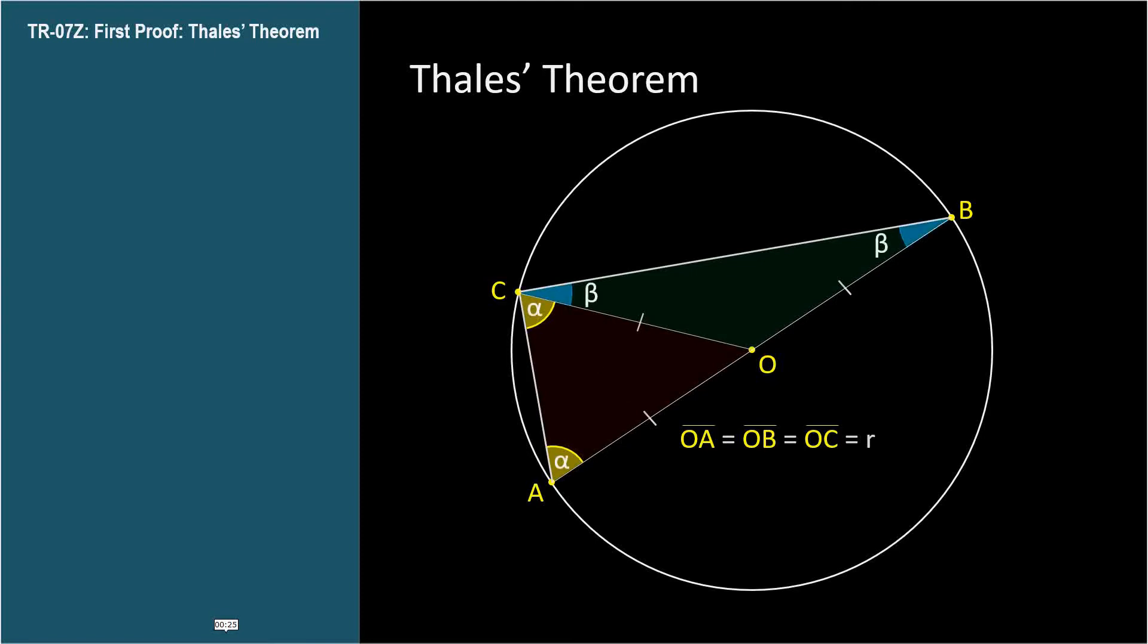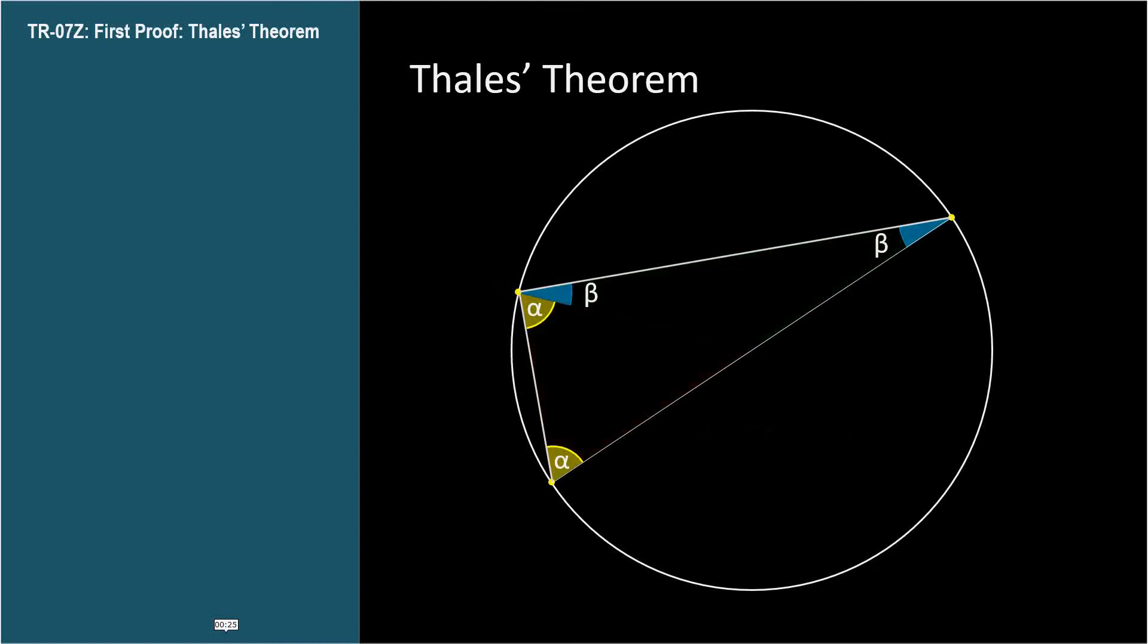Now consider the combined triangle ABC. We know all three of its angles: alpha, beta, and alpha plus beta.